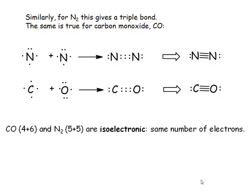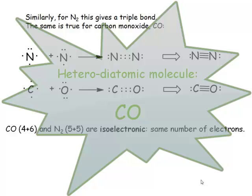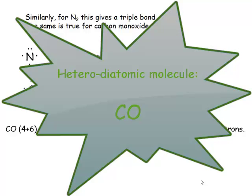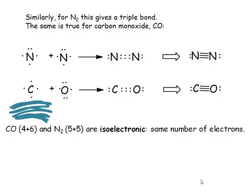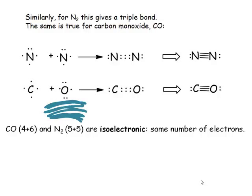This is our first example of a heterodiatomic molecule. These two atoms are different. Carbon is in group 14, has four valence electrons. Oxygen is in group 16, has six valence electrons. If we bring these two species together using Lewis theory, then what we would predict is a triple bond between the two species, and a lone pair on carbon and a lone pair on oxygen.